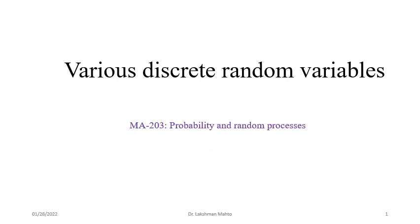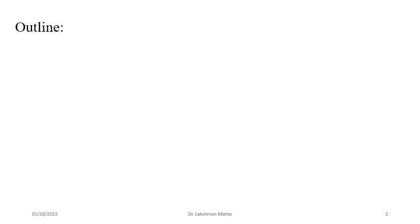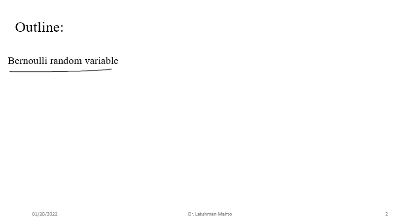Here we will discuss a few specific kinds of discrete random variables. First, I would like to discuss the Bernoulli random variable — the simplest random variable. It takes only two values: either zero or one, or minus one or one, depending on your approach — what you are willing to call failure or success. There are only two possible outcomes with respect to each random experiment: either failure or success.